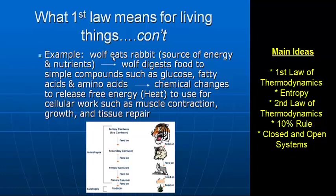Here's an example of a food chain: a wolf is going to eat a rabbit. The rabbit is a source of energy and nutrients. The wolf digests that food, breaking macromolecules down into building blocks — glucose, fatty acids, and amino acids. Then through chemical reactions, it further breaks those down and recombines them to make new molecules. There's something called free energy — the energy that's available and released into the environment.